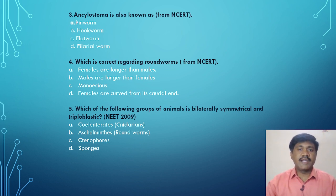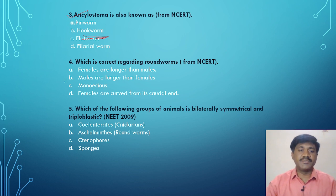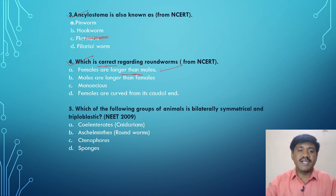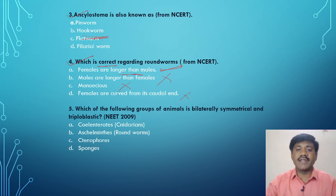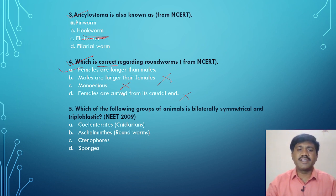Ancylostoma is commonly known as the hookworm — this point was already discussed in the examples. Next question: which statement is correct regarding roundworms? Females are longer than males — this statement is correct. Males are longer than females — this is a wrong statement. They are dioecious, not monoecious — so that option is also wrong. Females have a curved caudal end — no, it is the males that have a curved caudal end, so that is also wrong.